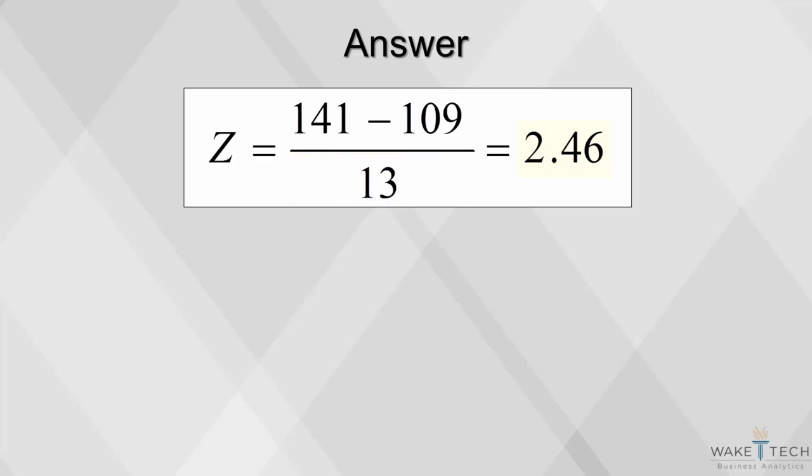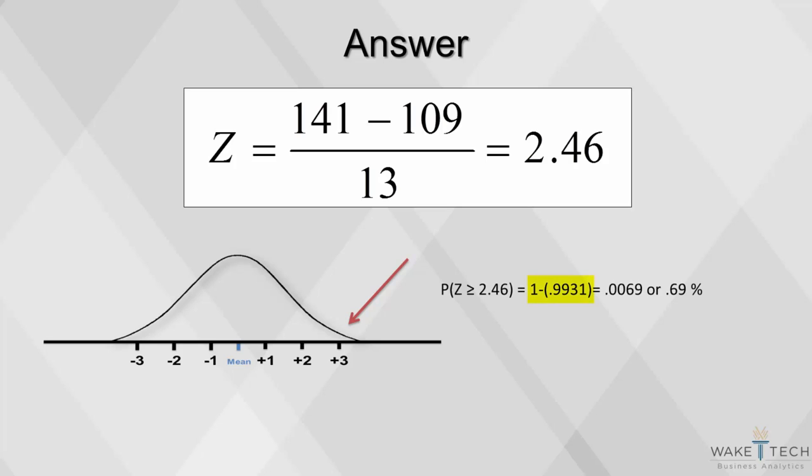Then we will use the normdist function in Excel to discover that our value for z, 2.46, equals 0.993. The chance of a baby being born heavier corresponds to the right tail of the distribution, so the probability that we will get a value for z that's greater than or equal to 2.46 can be discovered by subtracting our value for z, 0.993, from the total area of the standard distribution, 1.